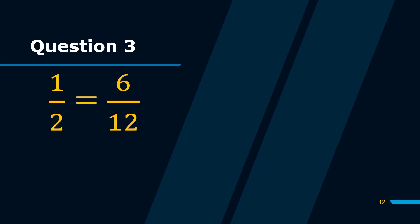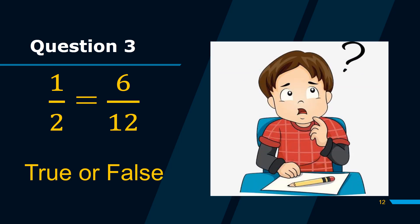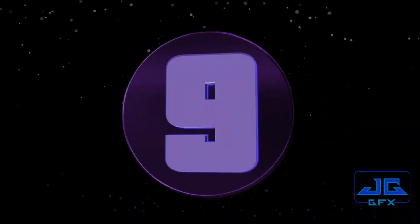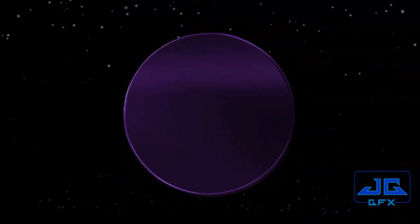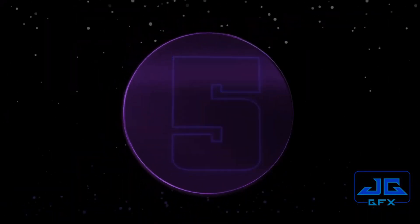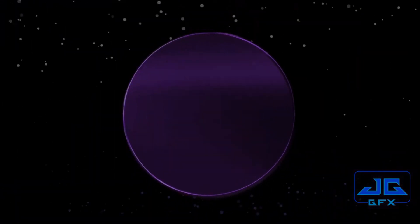For the third question: 1 over 2 is equal to 6 over 12. True or false? [10-second countdown]